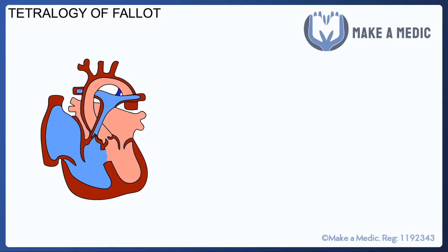There are two main congenital cyanotic heart diseases to be aware of. One of them is tetralogy of Fallot, which is a condition in which there are four main abnormalities within the heart. One of them is pulmonary stenosis, where the valve is narrowed and there's a huge amount of resistance going back towards the right side of the heart.